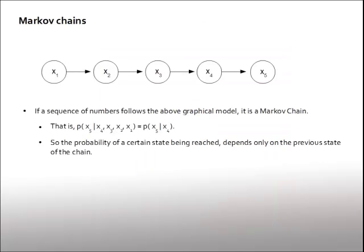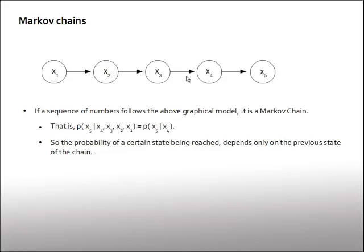Now, what about Markov chains? A Markov chain is any sequence of numbers or events which follows this graphical model, where each event in the sequence is only dependent on the event that occurred directly before it. We can write that as: the probability of X5 given X4, X3, X2, and X1 is simply the probability of X5 given X4. Each event is only determined probabilistically by the event that happened just before it.